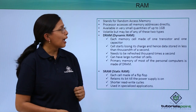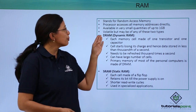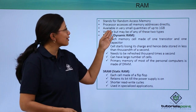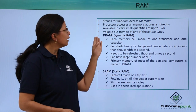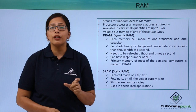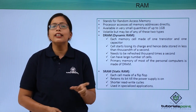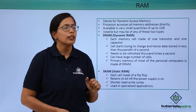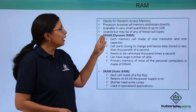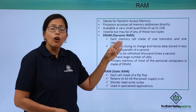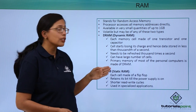RAM stands for random access memory. The processor accesses all memory addresses directly for a RAM. It is available in very small quantities because it is very expensive. But still that quantity is up to 1 gigabit or 2 gigabit. It is volatile, but it may be of two types: DRAM and SRAM.